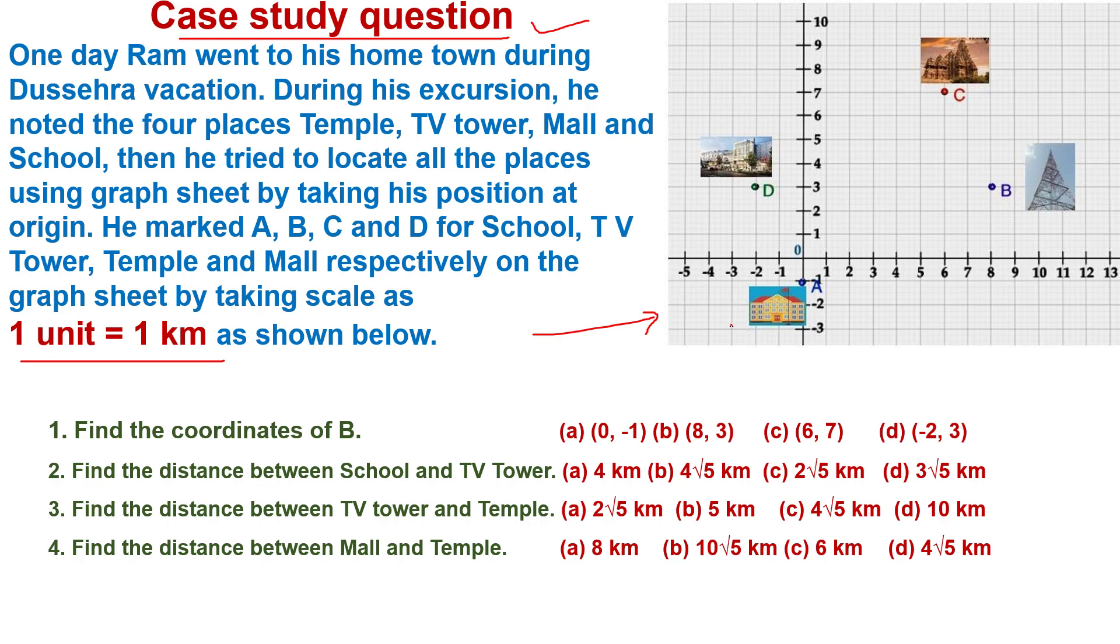Now you see, this is the Vidhyalaya, take the point. He took the point A, B for tower, C for temple, and D for mall.